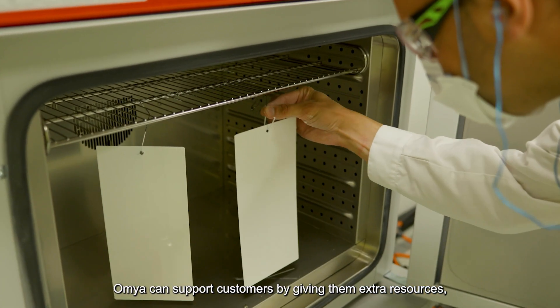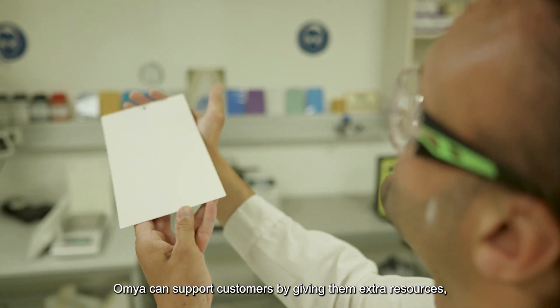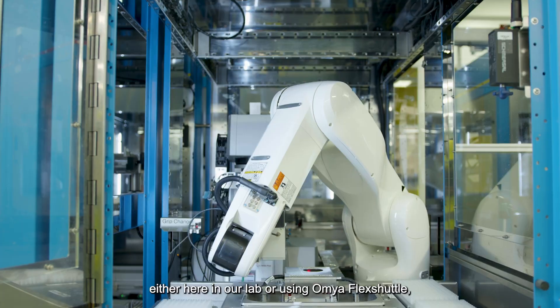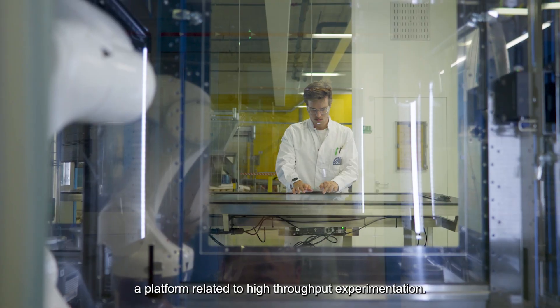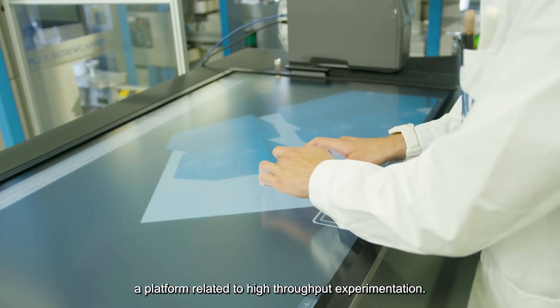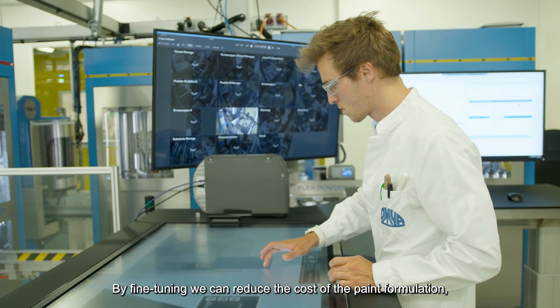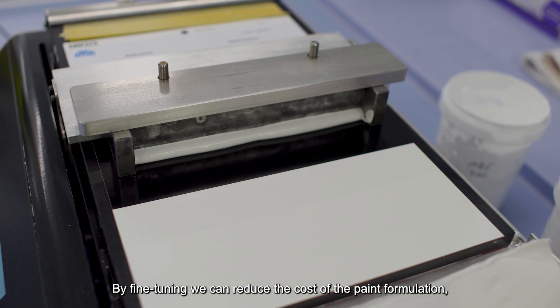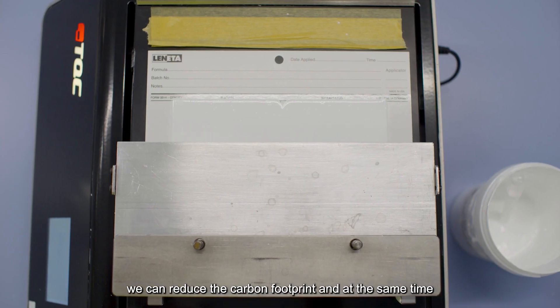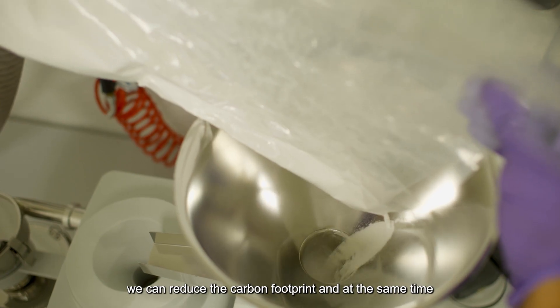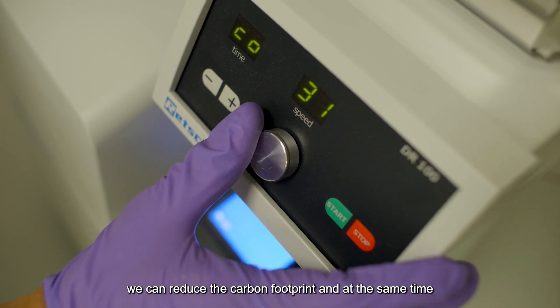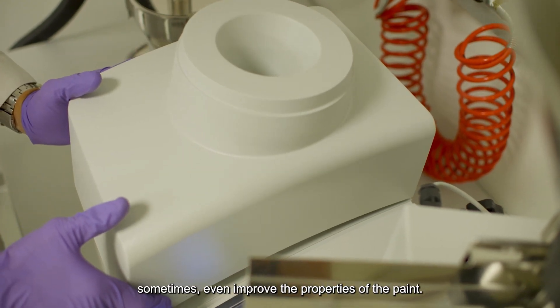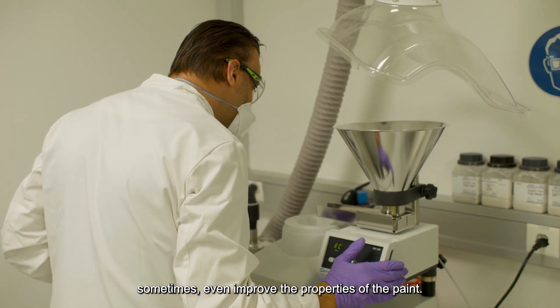OMIA can support customers by giving them extra resources either through our lab or using OMIA FlexSuttle, a platform related to high throughput experimentation. By fine-tuning, we can reduce the formulation cost of a paint formulation, reduce the carbon footprint, and at the same time keep the same properties or sometimes even improve the properties of the paint.